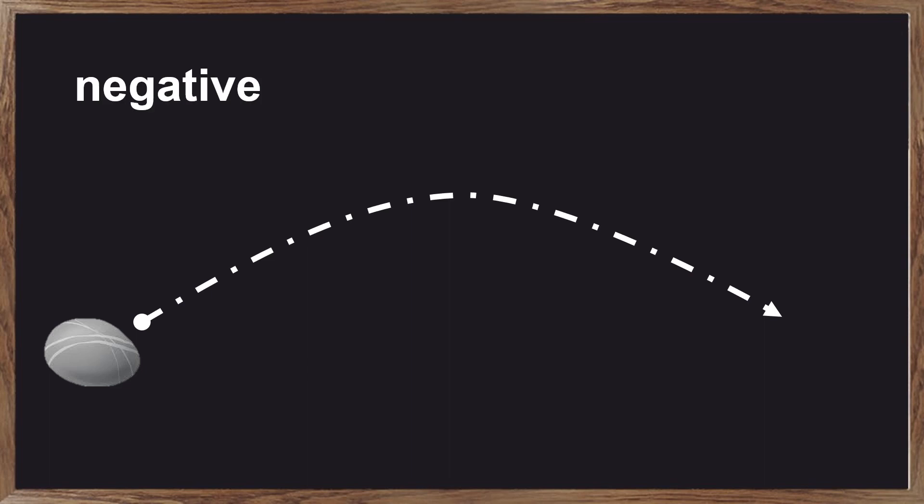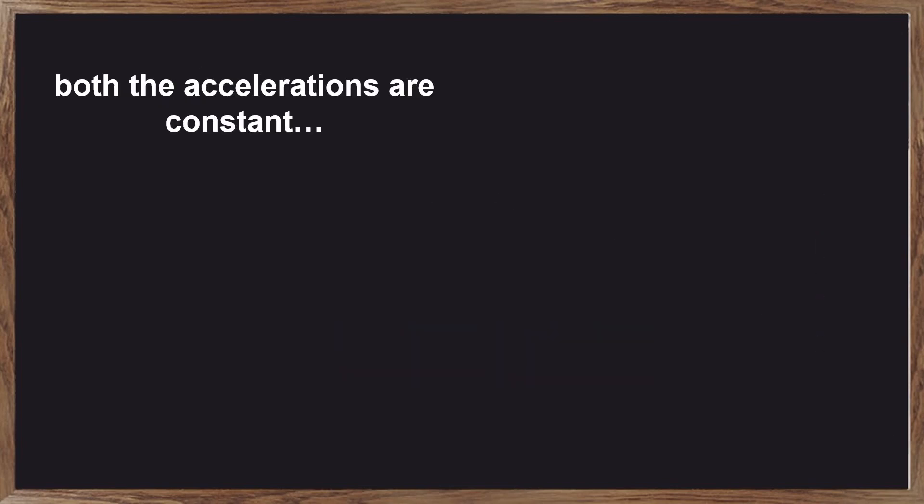Because the gravity is vertical, the acceleration of vertical motion is equal to zero. Both accelerations are constant, so the kinematic equation can be used.